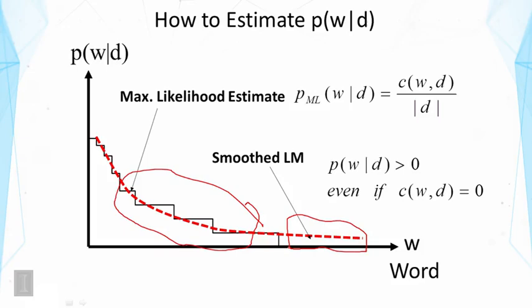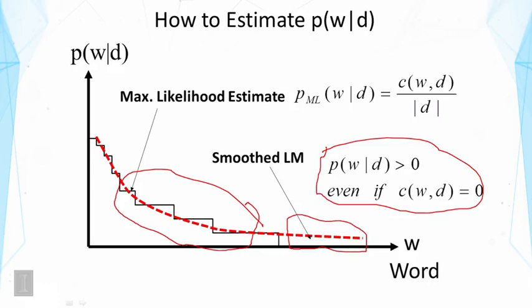All these probabilities must sum to 1. To improve the maximum likelihood estimator by assigning non-zero probabilities to words not observed in the data, we have to do smoothing. Smoothing has to do with improving the estimate by considering the possibility that if the author had been asked to write more words for the document, the author might have written other words. A smoother language model would be a more accurate representation of the actual topic.